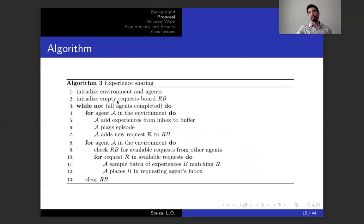The algorithm is also simple. You initialize your environment and your agents, and you initialize your request board. While not all agents have completed, for each agent you're going to see if you have experiences in your inbox and add them to your buffer. Then you play the episode, and here you already have the benefits of the added experiences in your buffer. After the end of the episode, you add a new request to the request board. You have a round where each agent in the environment is going to check the request board for available requests. For each request, he's going to look at its buffer, sample a batch of experiences that matches the request from other agents, and place those experiences in the requesting agent's inbox so the request agent can later add to its own buffer.